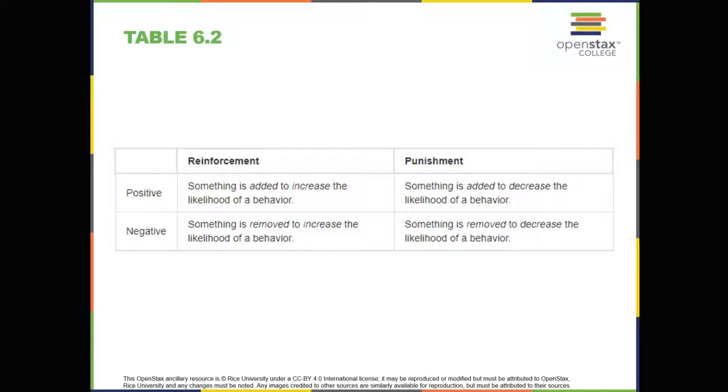In positive punishment, you add an undesirable stimulus to decrease a behavior. An example of positive punishment is scolding a student to get the student to stop texting in class. In this case, a stimulus, the reprimand, is added in order to decrease the behavior, texting in class.